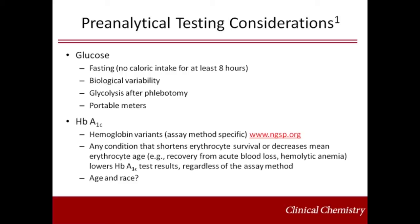There is also the issue of sample stability. Decreases in glucose concentrations in whole blood ex vivo are due to glycolysis. The rate of glycolysis, reported to average 5 to 7 percent per hour, varies with the glucose concentration, temperature, leukocyte count, as well as other factors. Such decreases in glucose concentration will lead to missed diabetes diagnoses in a large proportion of the population who have glucose concentrations near the cut points for the diagnosis of diabetes.